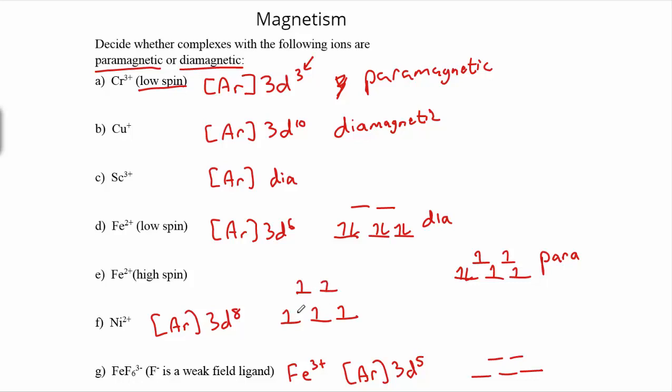And it doesn't matter if we fill it in the low spin or the high spin way, because with 8 electrons, the net result would be exactly the same. And we'd end up with two unpaired electrons right there. And so nickel 2 plus would also be paramagnetic.